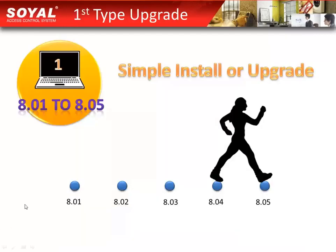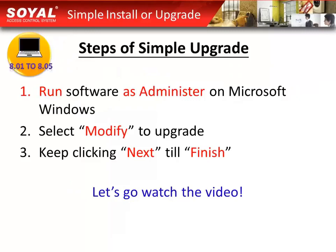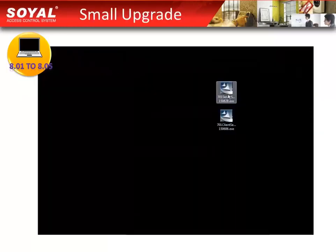Now let's check how to upgrade. This is the first part: simple install or upgrade. Here are three steps for simple upgrade. First, run the software as administrator on Microsoft Windows. Second, select Modify to upgrade. Third, keep clicking Next till finish. Let's watch the video.